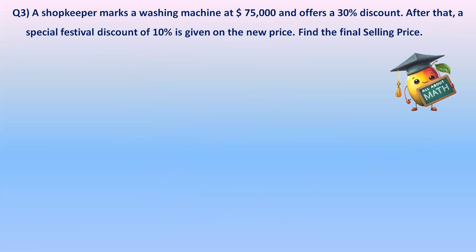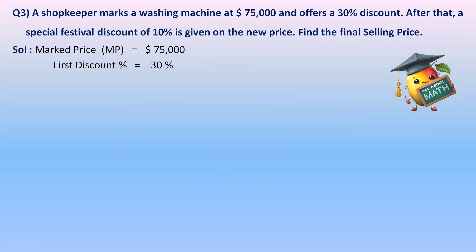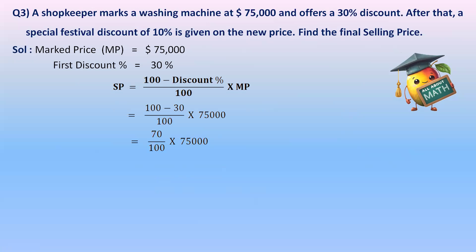Question 3: A shopkeeper marks a washing machine at 75,000 and offers a 30% discount. After that, a special festival discount of 10% is given on the new price. Find the final selling price. First, apply the 30% discount: (100 − 30) / 100 × 75,000 = 70/100 × 75,000 = 70 × 750 = 52,500 rupees.